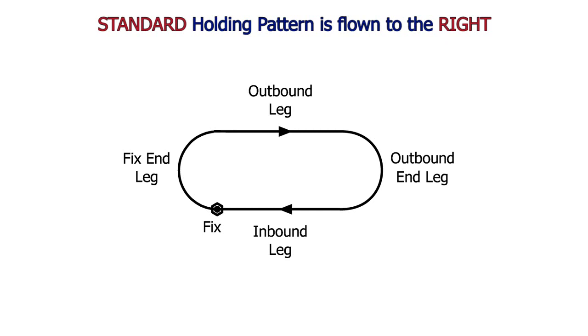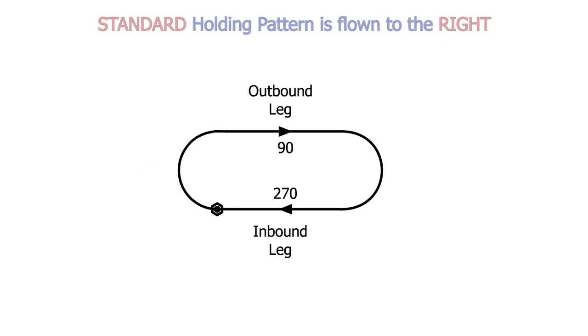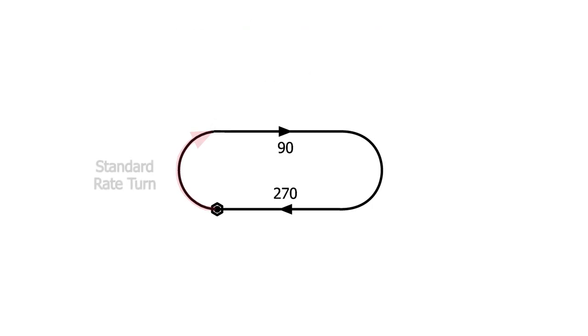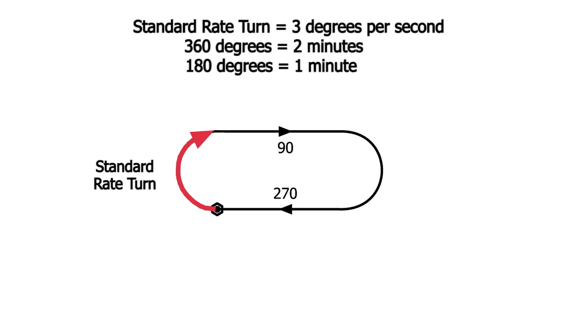For ease of understanding, I have given this holding pattern directions. A heading of 270 on the inbound leg and a heading of 090 on the outbound leg. Starting from the fix, we'll do a standard rate turn to the right for 180 degrees. Really quick, a standard rate turn is a turn in which we are turning at a rate of 3 degrees per second, meaning that a full 360 degree circle will be done in two minutes.